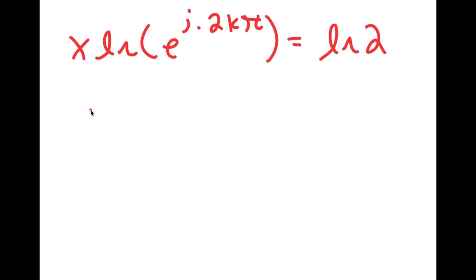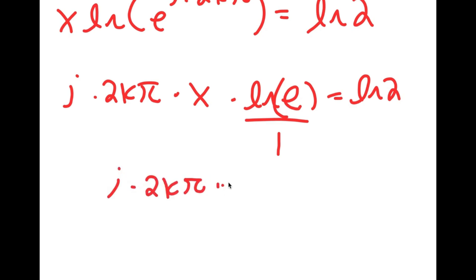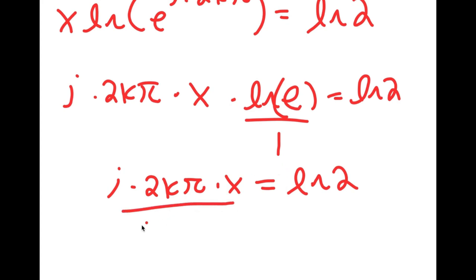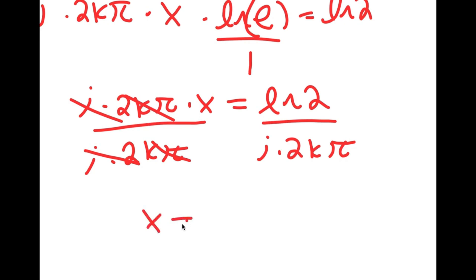This is the same thing as i times 2k pi times x times ln e, using the ln power property again. This is equal to ln 2. And ln of e is equal to 1. So I'm left with i times 2k pi times x times 1, which equals ln 2. To solve this, I'm going to divide both sides by i times 2k pi. These cancel out, and I'm left with x is equal to ln 2 over i times 2k pi.